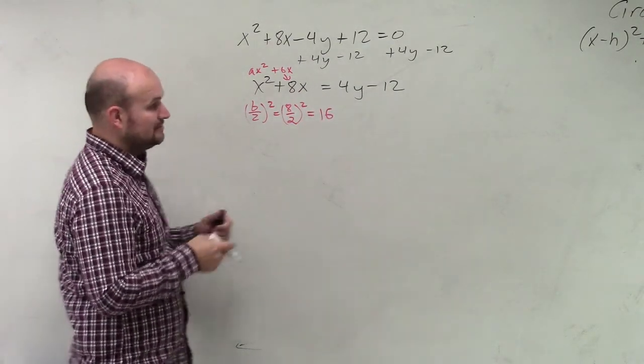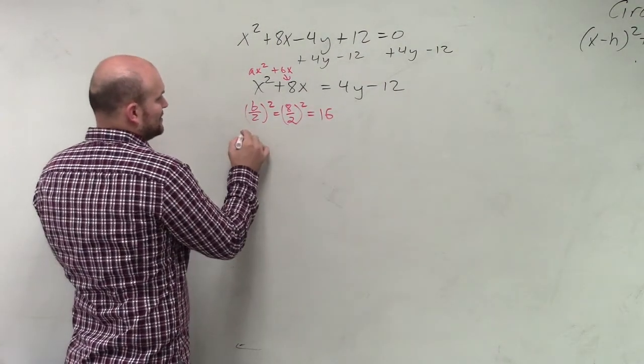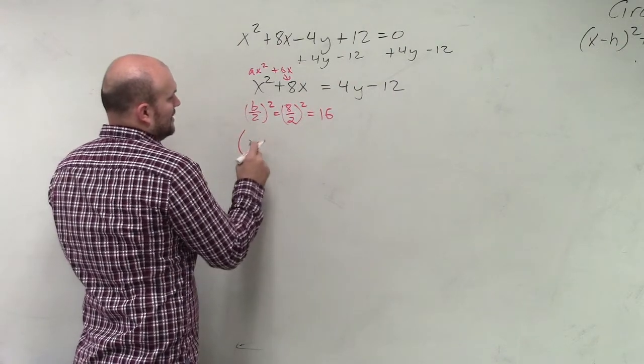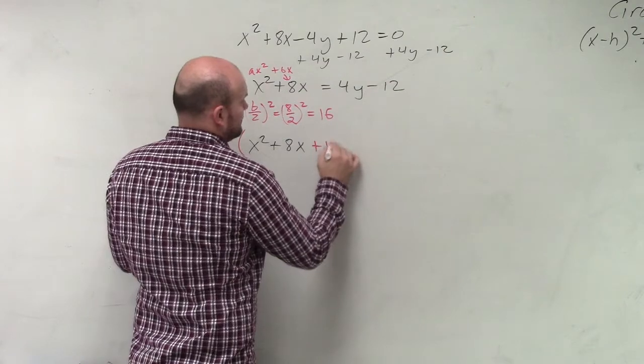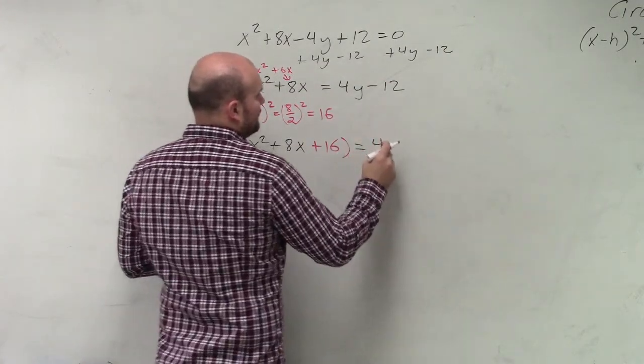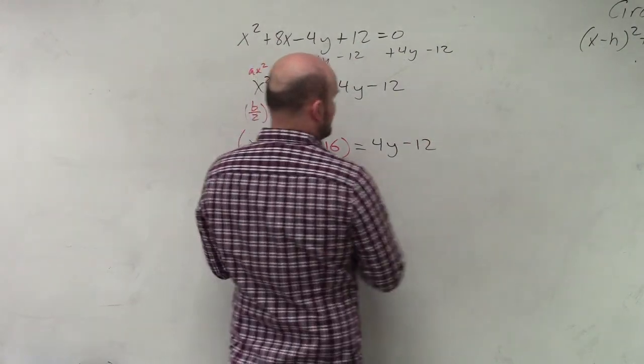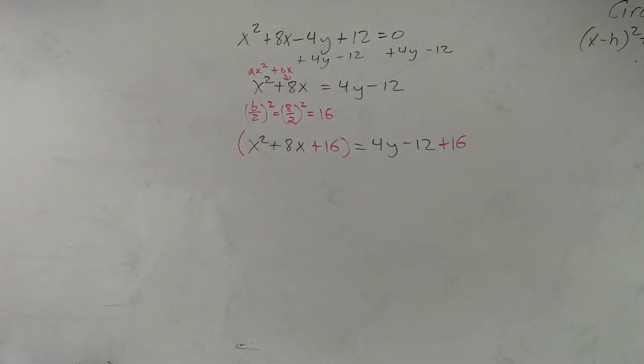Now remember, you're going to add that to your left side and add that to the right side. So you're going to have an equation that's going to look like this: x² + 8x + 16 = 4y - 12 + 16. Whatever you do on one side, you have to do on the other side.